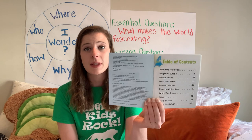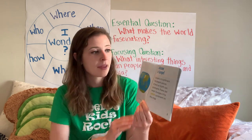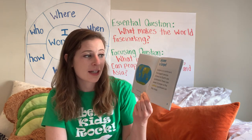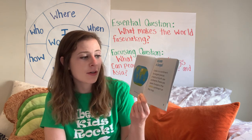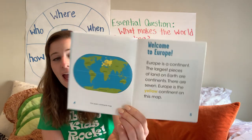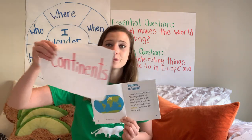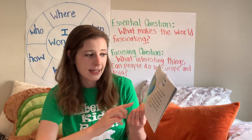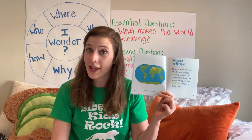It starts with a table of contents, which is found in a lot of informational books, and it tells us all of the different things we are going to learn about. Welcome to Europe. Europe is a continent — the largest pieces of land on earth are continents. There are seven. Europe is the yellow continent on this map. A continent: they are the largest pieces of land on earth, and there are seven of them.